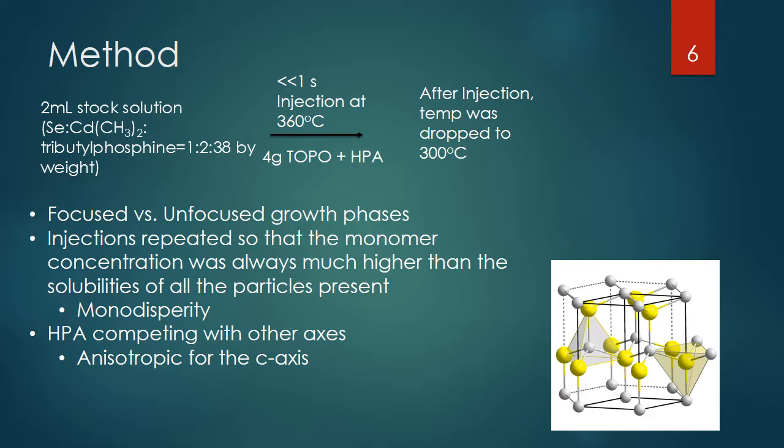They would test the aliquot using UV-Vis and photoluminescence spectra to examine what kind of growth they had gotten so far. Once they determined what phase they were in, if they wanted the rod to grow longer, or if they had gotten the dot instead because they waited too long, they would inject more of the monomer so that the monomer concentration would go back up to the focused phase — the growth they wanted for the quantum rod.